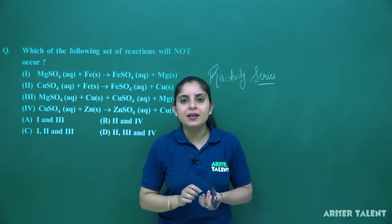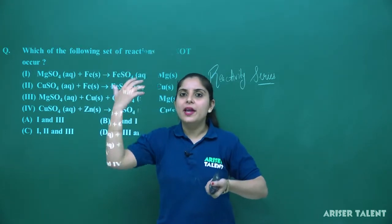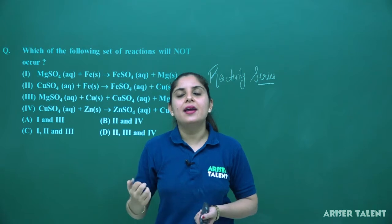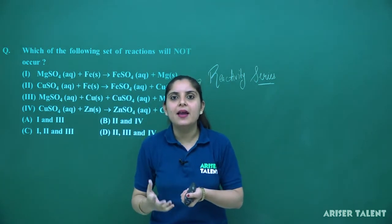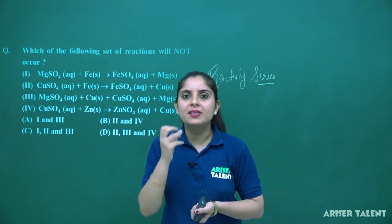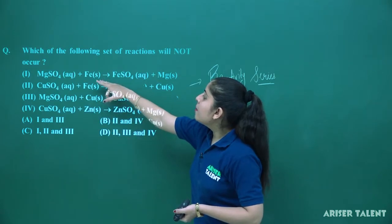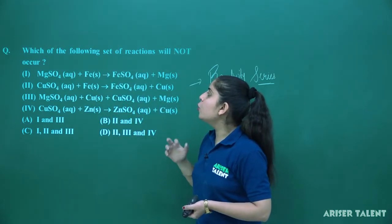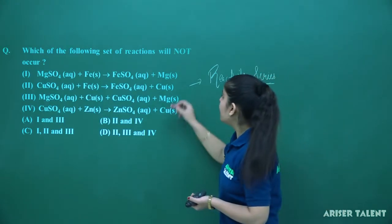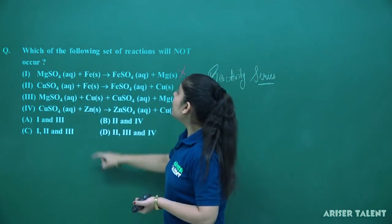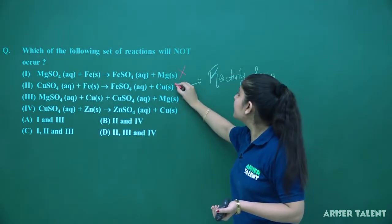If a metal has no tendency to replace another metal from aqueous solution, the reaction will not occur. In the first reaction, magnesium and iron — magnesium is not able to replace iron. So this is a wrong equation. Again, if we talk about Fe and copper, copper is not able to replace iron.